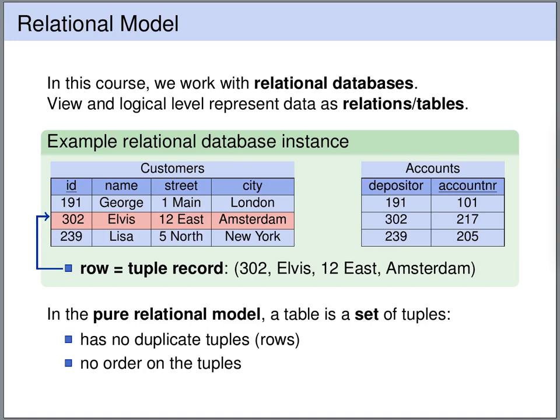In the pure relational model, these tables are considered as mathematical relations — they are sets of tuples. The accounts table is a binary relation, a set of pairs, because it has two columns. The customers table has four columns, so it is a set of four-tuples. One of the tuples in this set is, for example, (302, Elvis, 12 East, Amsterdam). There are two important things to note: tables allow duplicate rows, which is not allowed in the pure relational model since a set cannot have duplicate elements. Also, tables suggest an order on the rows, which is also not the case in the pure relational model — in a set, there is no order on elements.